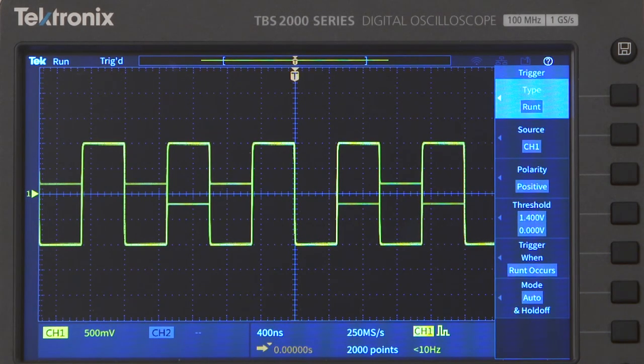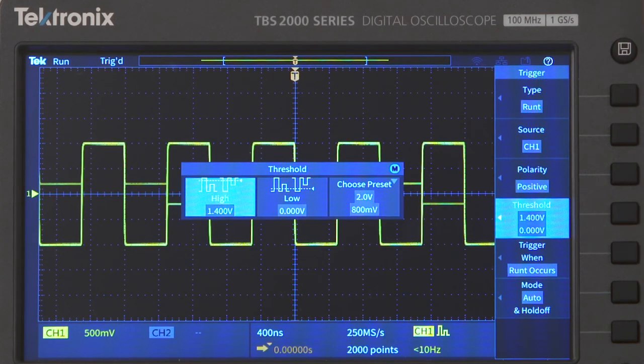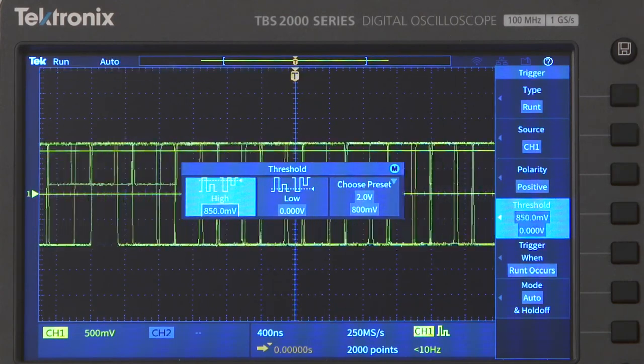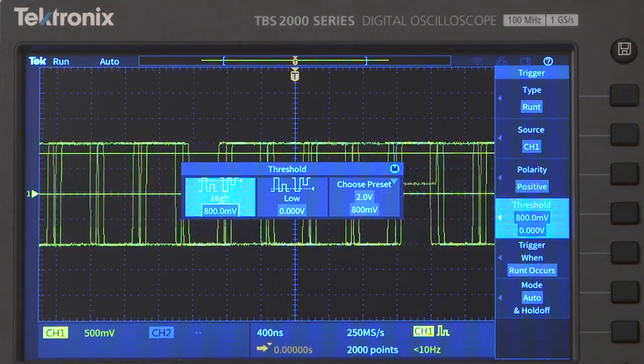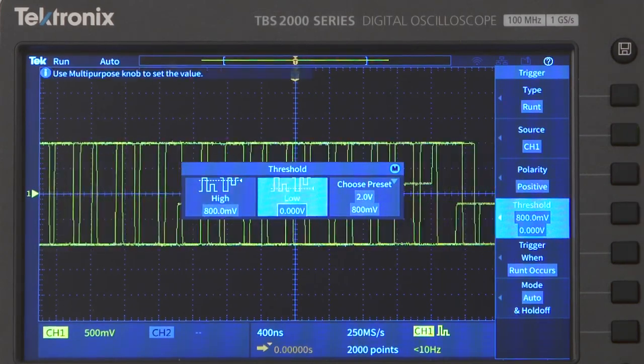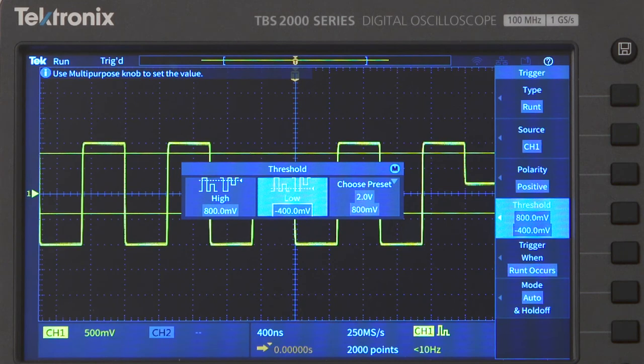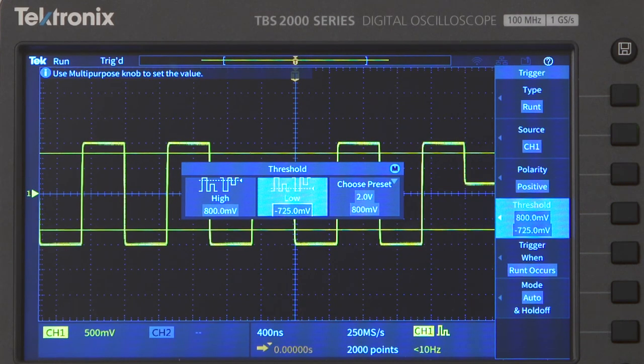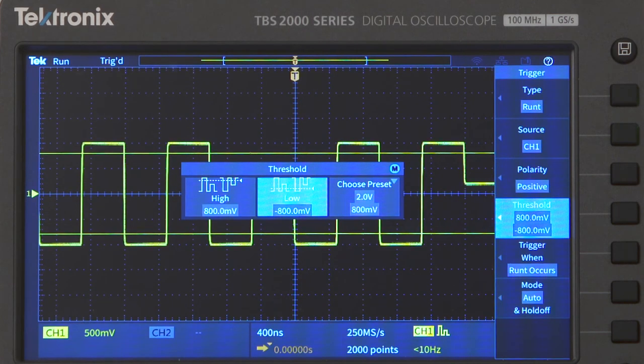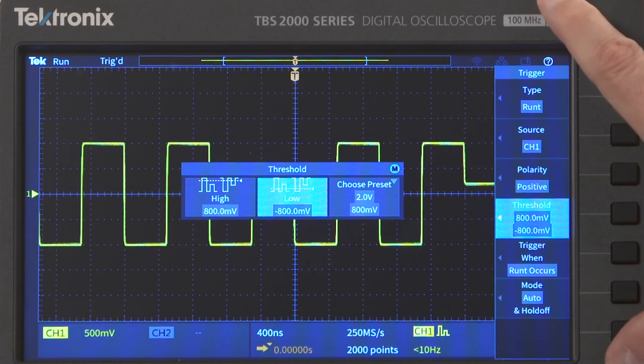Now let's capture a positive runt. The polarity is already set to positive. I'll set the threshold to plus 800 millivolts, and minus 800 millivolts. I'll leave the trigger when setting to trigger on any runt. And there's our runt.